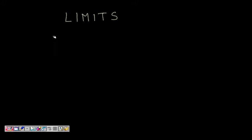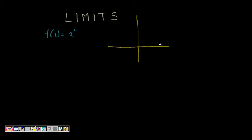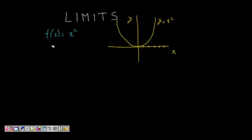If we have a function f(x) = x², most of you will know that if we plot this function on the x-axis and y-axis, y = x² gives us a parabola — something like this. This is the graph.